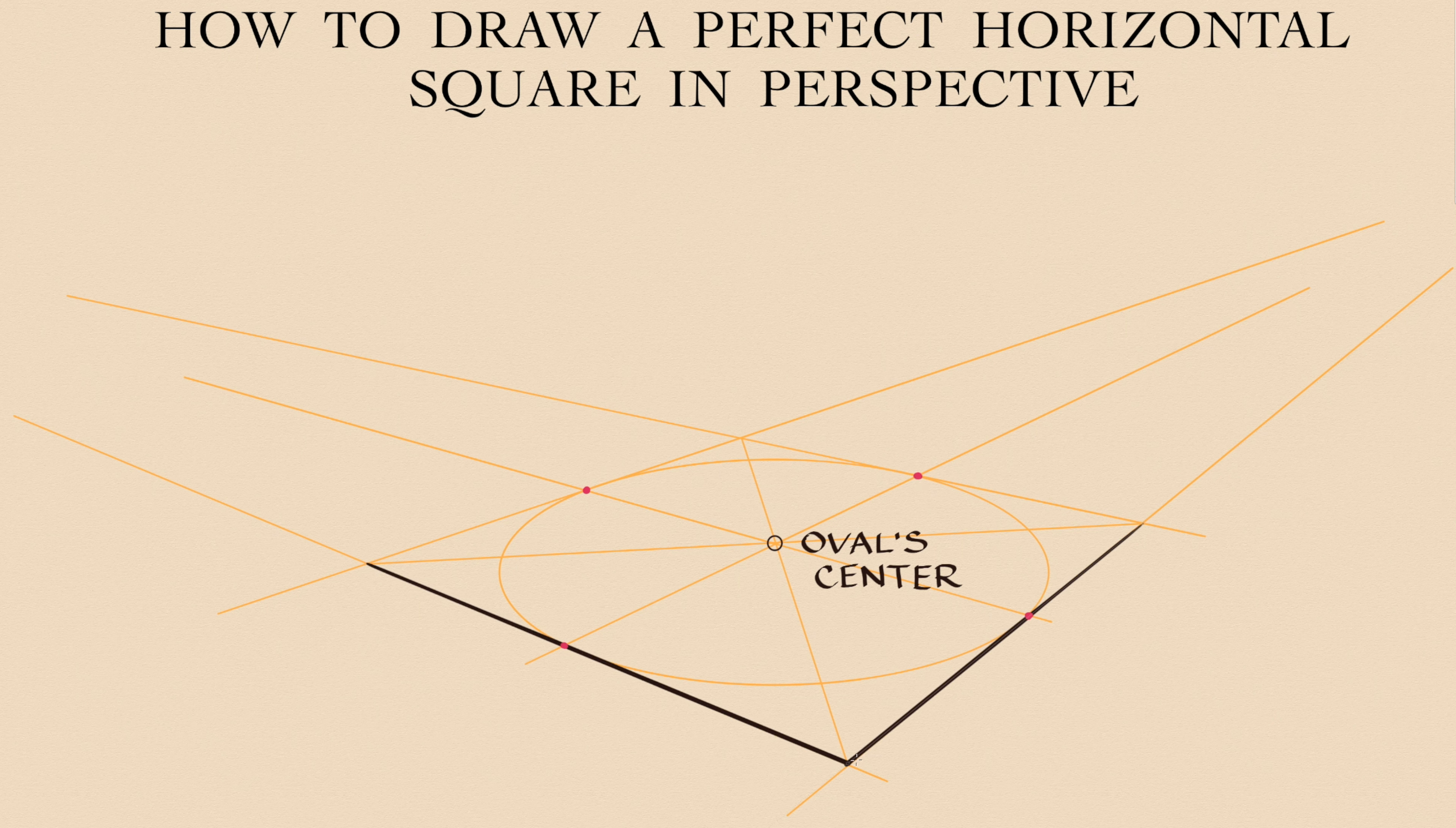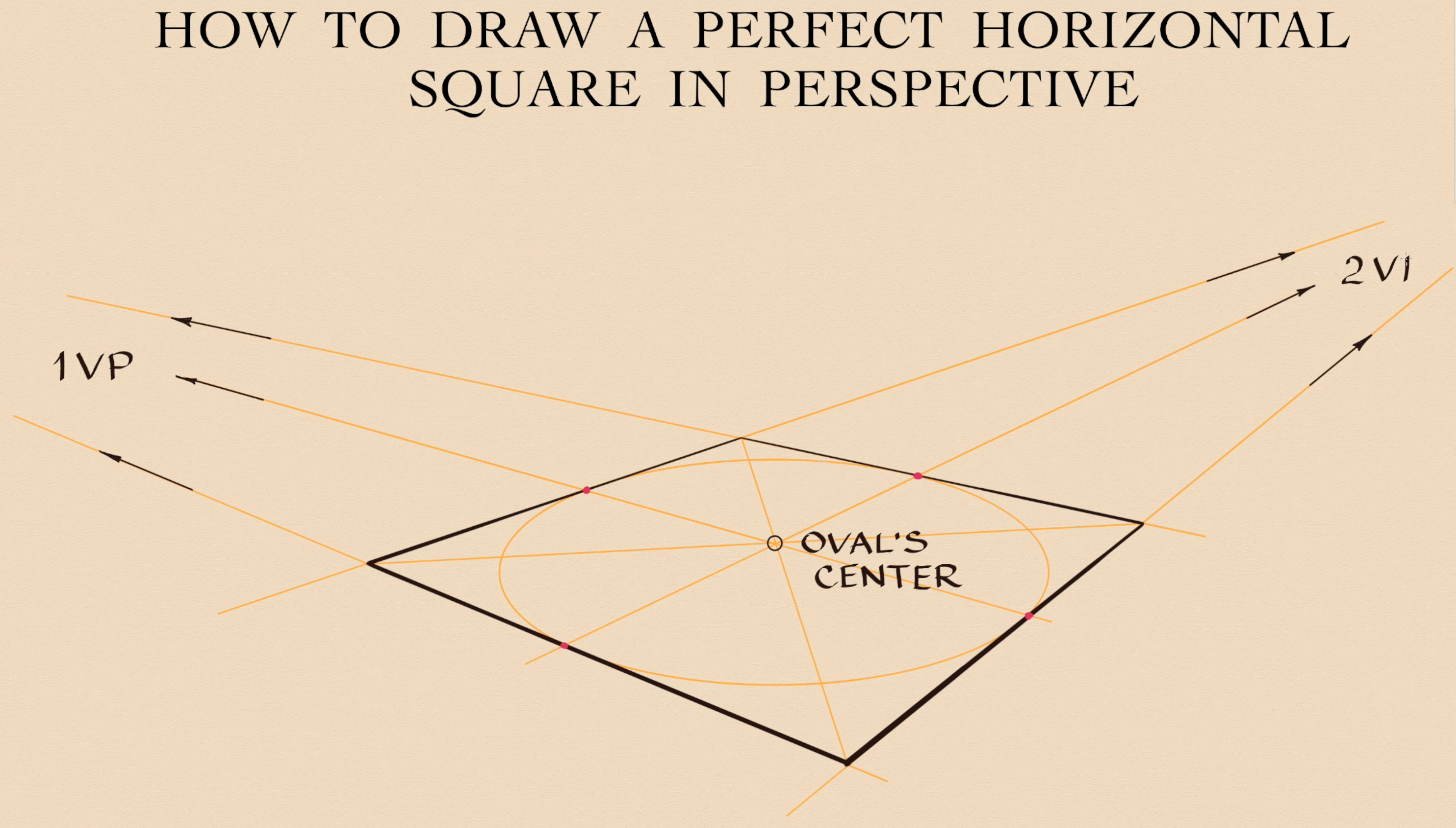Note that the side of a square that is closer to a viewer is bolder than the sides that are further away. Vanishing lines of that square will converge into two vanishing points, which are located on the same horizon line somewhere beyond the drawing area.